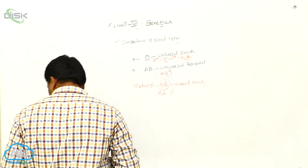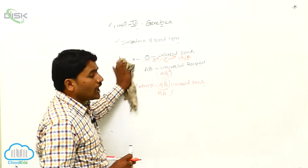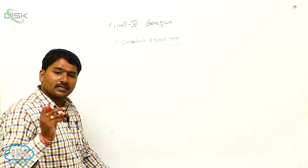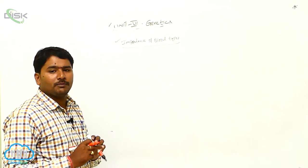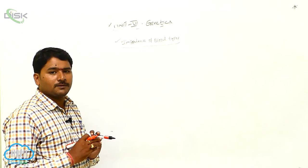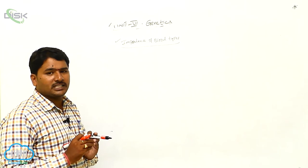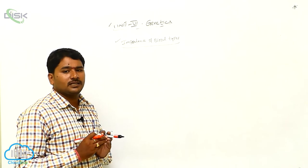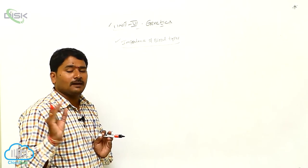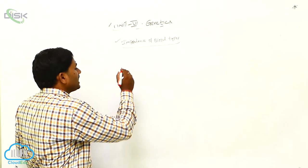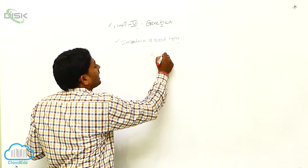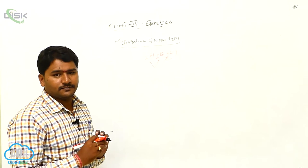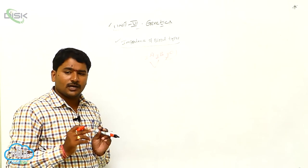This is about blood groups: how they are determined, how many types there are, what antigens and antibodies are present, and what genes are responsible for antigen production. There are three alleles: I^A, I^B, and I^0. These three alleles are codominant.